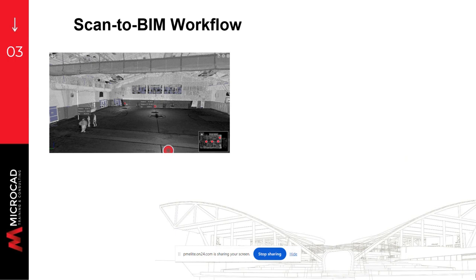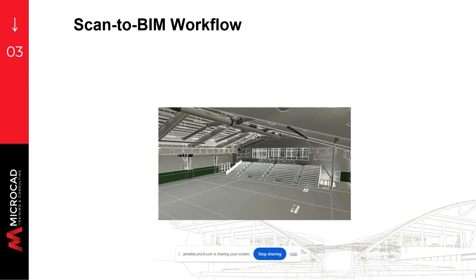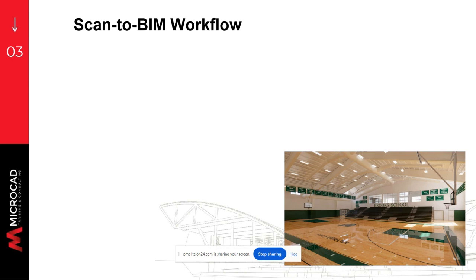This is a representation of an actual model done in Revit based off that three-dimensional point cloud file that you import into your Revit application. You can even go further and create more realistic representations — this is an example of an indoor basketball court for a high school created using Revit and Enscape. The bleachers, as you can see on the bottom, represent new construction that they wanted to do, so it's represented within the reality context.